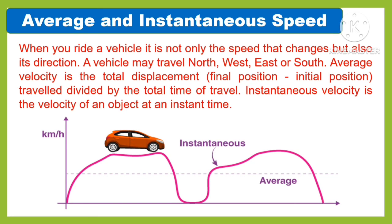Average velocity is the total displacement — the final position minus the initial position — divided by the total time of travel. Instantaneous velocity is the velocity of an object at an instant in time.